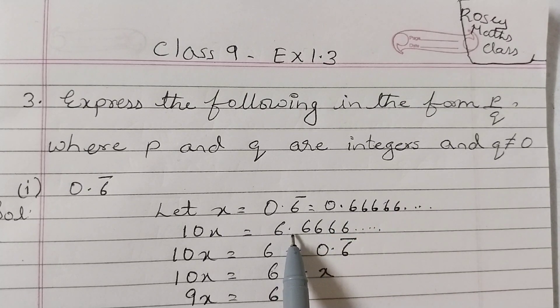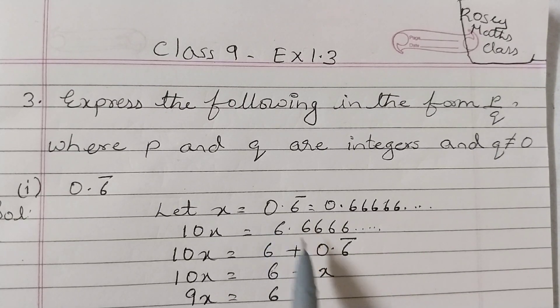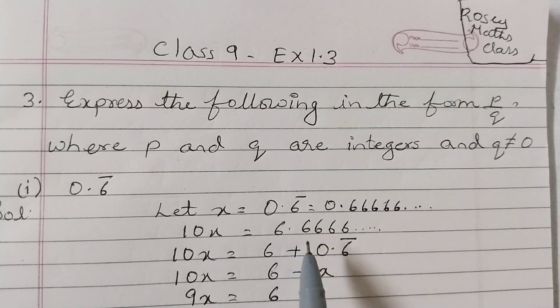10x equals to, we rewrite this number as 6 plus 0.6̄, because we want x here. So we will write 6 plus 0.6̄. It is the same as this number. Now this is x, so replace this by x.